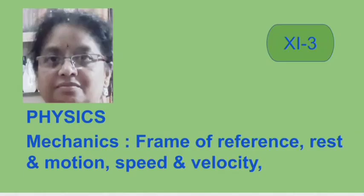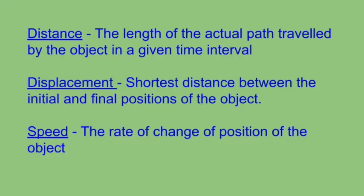Any type of motion means change in position of the object in a certain time interval. In doing so, the object travels through a path. The length of the actual path traveled by the object in a given time interval is called distance. There could be many distances between initial and final positions, and the shortest distance between the initial and final positions of the object is known as displacement.